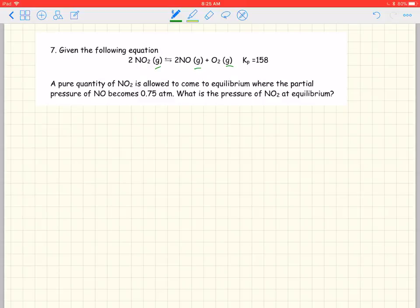Let's set up an ICE table to solve this problem. We have a pure quantity of NO2 initially that's allowed to come to equilibrium. So initially we don't have any of the other things because pure means only one substance. It must be NO2.